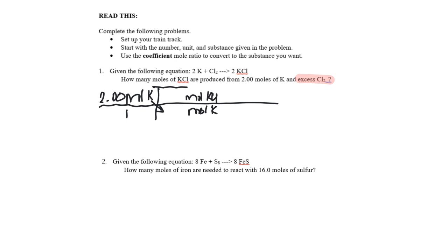When we first learned stoichiometry, you always had one next to mole — but it's March now, so we're not always doing that. If we're mole to mole, we go to the balanced equation. I pull the coefficient next to K, which is two, and the coefficient next to KCl, which is also two. Cancel units, do the math: two times two divided by two gives us two moles of KCl can be produced.